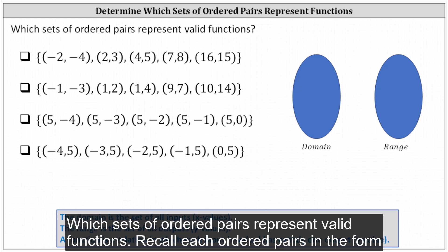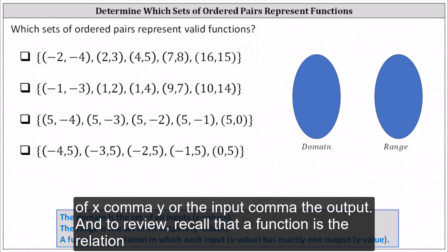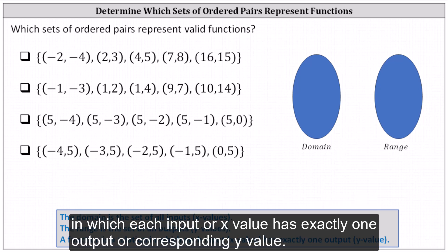Which sets of ordered pairs represent valid functions? Recall each ordered pair is in the form x comma y, or the input comma the output. For review, a function is a relation in which each input or x value has exactly one output or corresponding y value.